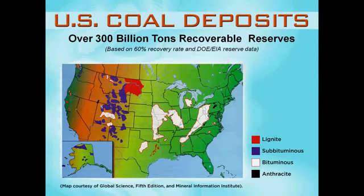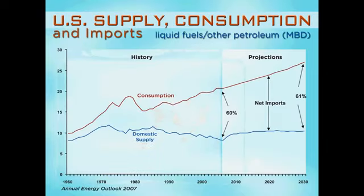Coal is our most plentiful domestic resource. There is enough to last at least 275 years at our current rate of use. Based on a 60% recovery rate, we have 300 billion tons of recoverable reserves. It is cheap, plentiful, and secure. The U.S. is increasing its dependence on imported oil.